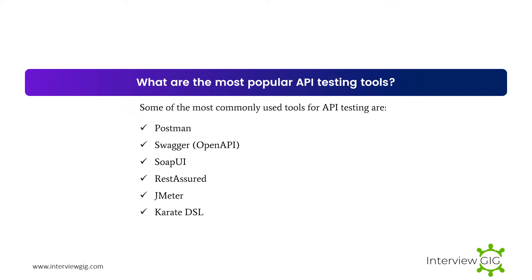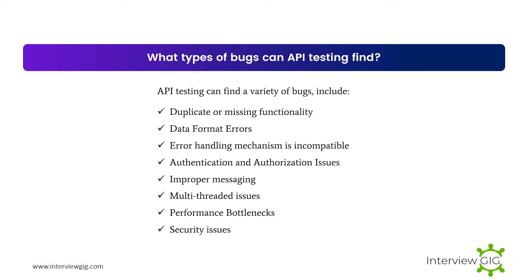What are the most popular API testing tools? Some of the most commonly used tools for API testing are: Postman, Swagger/OpenAPI, SoapUI, Rest Assured, JMeter, and Karate DSL.